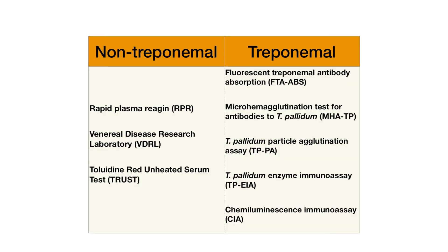This slide lists all the different non-treponemal and treponemal test names including their abbreviations and full names. I wouldn't recommend memorizing all of them. Learn the non-treponemal test names and abbreviations well so that anything else you see is a treponemal test. RPR and VDRL are the most commonly mentioned non-treponemal tests on exams. Another trick is to look for 'TP' in the abbreviations, which stands for treponema pallidum, indicating a treponemal test.